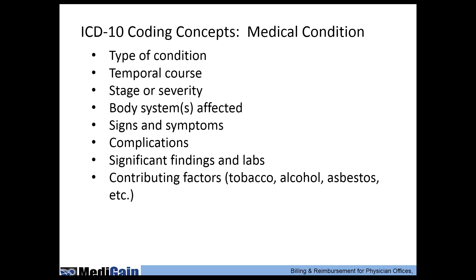For medical conditions: give the type and origin or etiology of the condition if known. Note any temporal course — is the condition worsening over time? Document the stage or severity of disease, such as chronic kidney disease. Note any body systems affected or complications, and any significant lab or radiology findings that may create a linked diagnosis code. Contributing factors like tobacco and alcohol should be noted as well.